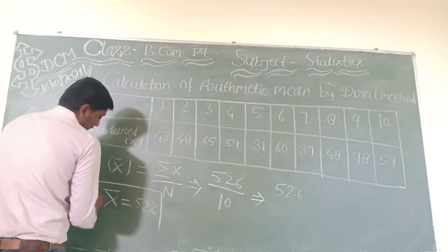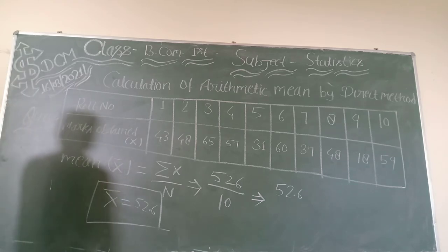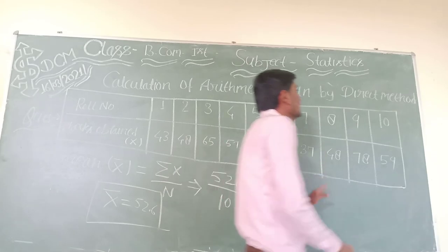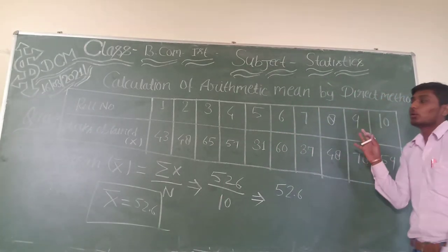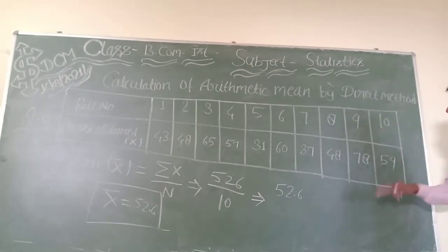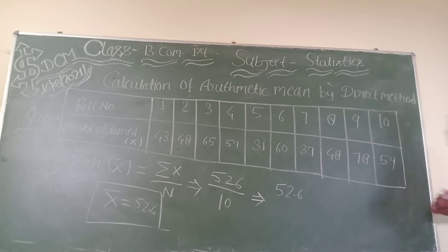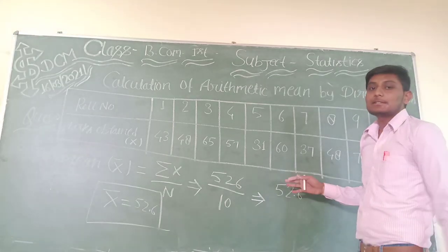So this is the mean. The direct method is used to calculate the mean of any given data using the formula X bar equals sigma x upon N. I hope you understand the direct method for calculating the mean. Thank you, and see you in the next lecture.